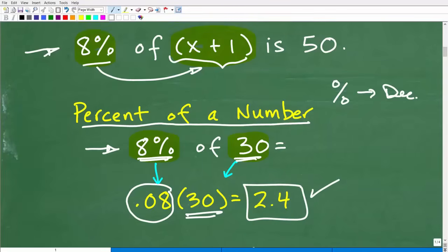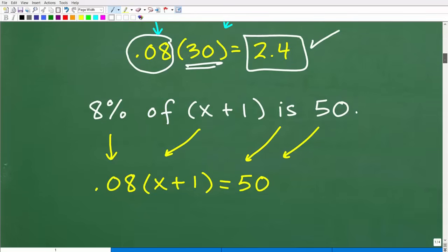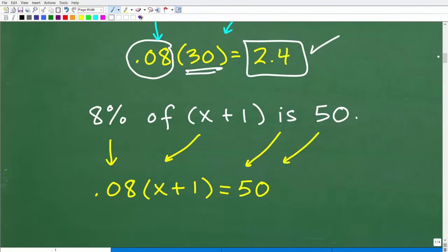So knowing that if we want to find 8% of this number, we don't know exactly what it is, it's expressed as X plus one, we're basically going to follow the same pattern here, but we have some additional information. And the way I'm going to suggest you do percent problems that are a little bit more involved is to use algebra. Set up a basic equation. It's not that difficult. Let me show you exactly what I'm talking about right now.